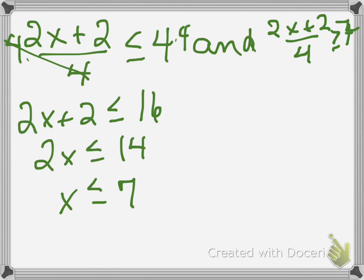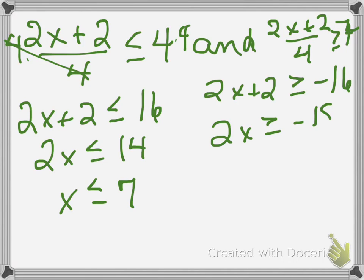For this case over here, when I multiply by 4, I end up with 2x plus 2. Remember, I flipped the inequality because I changed that to the negative 4. So negative 4 times 4 is negative 16. Subtract 2, so I have 2x is greater than or equal to negative 18. Then I'm going to divide that by 2, and x is greater than or equal to negative 9.